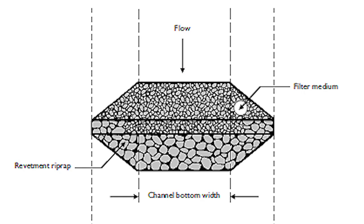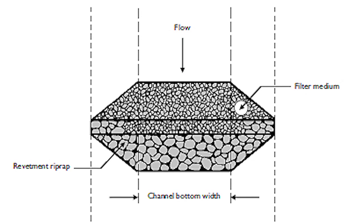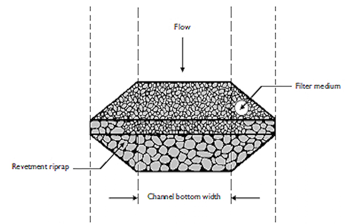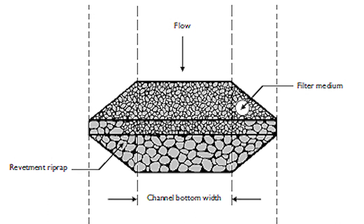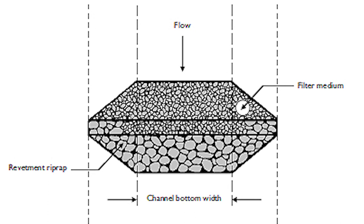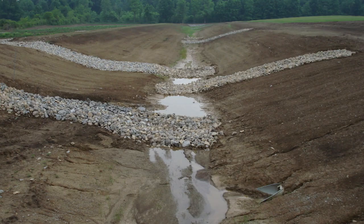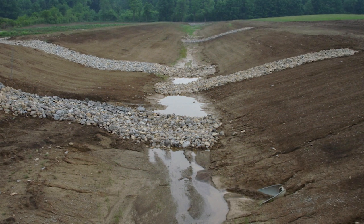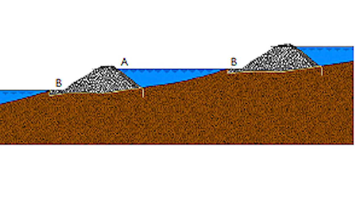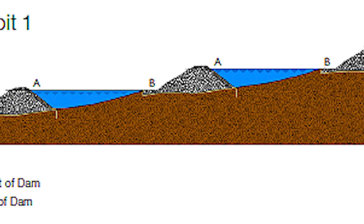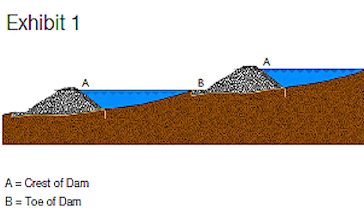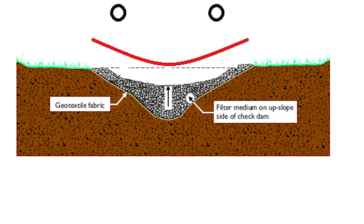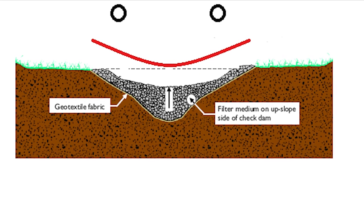How to install: Install filter fabric, riprap, and aggregate to dimensions and grades shown in the construction plans. Install the smaller filter stone on the flow side and properly shape them so they are lower in the middle to allow water to flow over instead of finding its way around them. The check dam should smile at us.